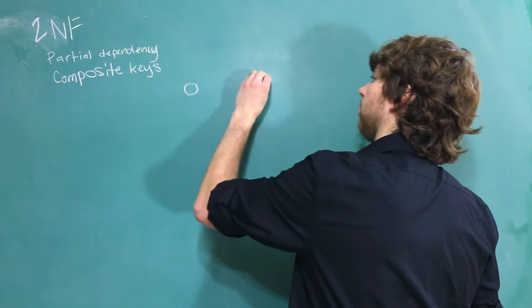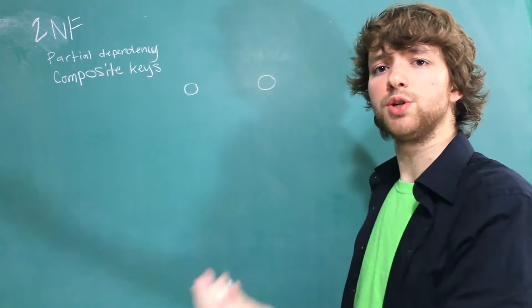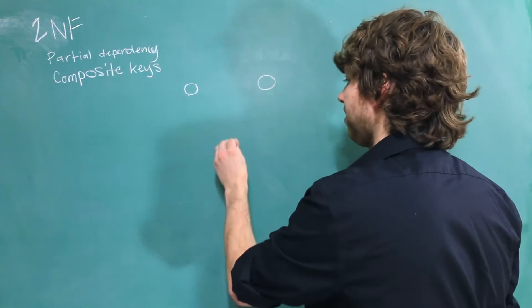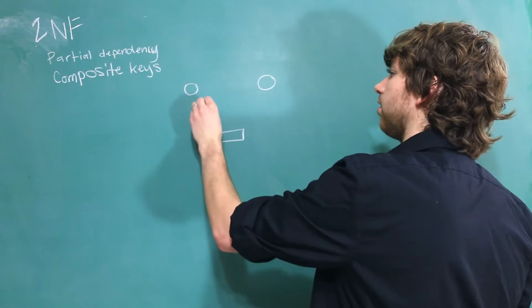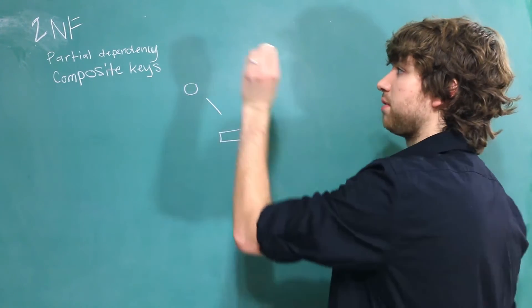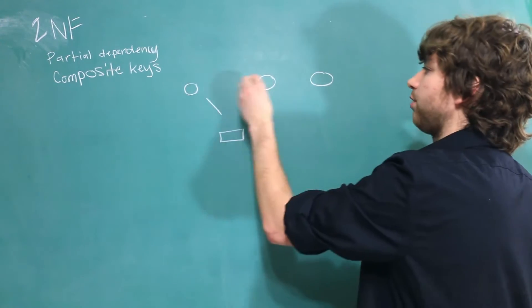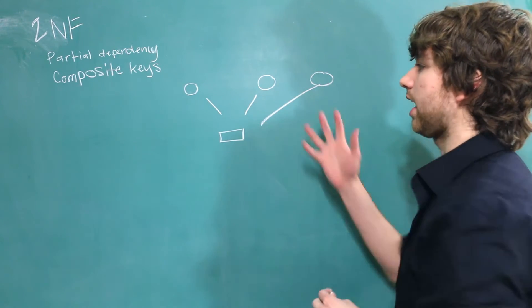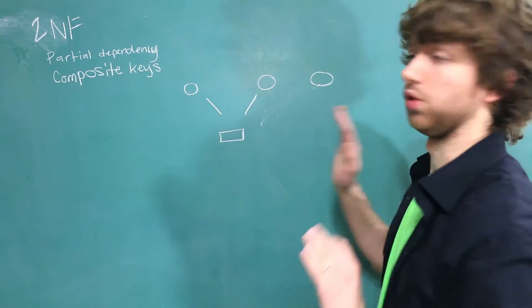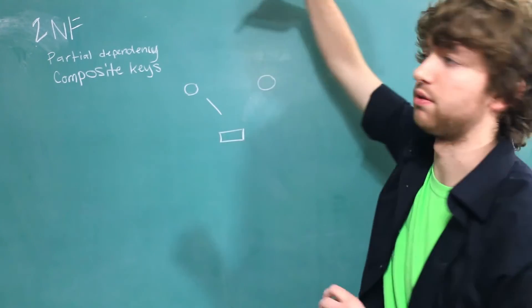So let's say we have one key over here and one key over here. Now, this is where the partial dependency comes in. When you have a column, it depends on that primary key. So that means if we have a column down here, it's going to need to depend on the primary key. But when we have composite keys, it has to depend on both of them. But if we have a partial dependency, it depends on less than all of them. So for example, if we have three columns that consist of the primary key, it has to depend on all of them. If it only depends on two, we have what's known as a partial dependency. So in the situation of only having two, if it depends on only one, we have a partial dependency.